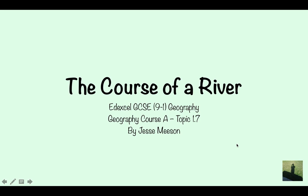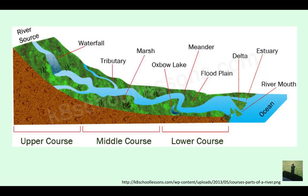Right, as part of the new 9-to-1 GCSE and Excel course, you need to learn about the course of the river. So the river is split into three sections: the upper course, the middle course, and the lower course.